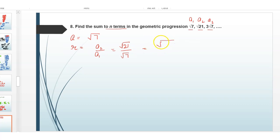We can write this as 21 which is 7 into 3 divided by root 7. Root 7 will cancel, so what we get is root 3. Common ratio is root 3.